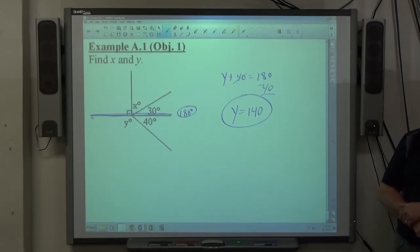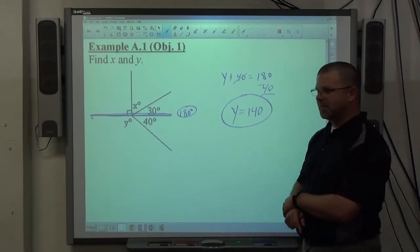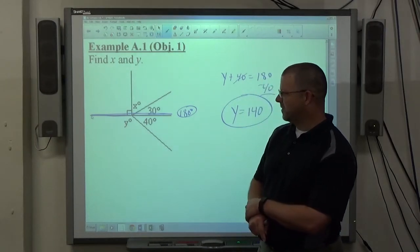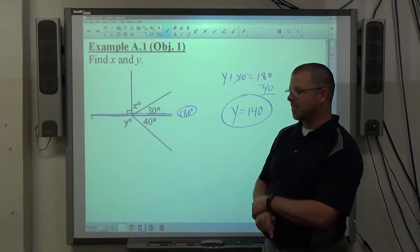How do you know x plus 30 equals 90? Because the angle opposite from it is a 90 degree, and the linear angle is 180. And since the other one is 90, those two have to equal 90 degrees.